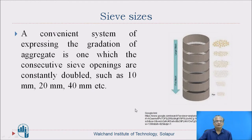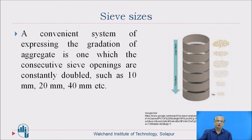What are the sieve sizes? A convenient system of expressing the gradation of aggregates is one in which the consecutive sieve openings are constantly doubled, such as 10 mm, 20 mm, 40 mm, and so on. Here you can see the sieves arranged in sequential order.